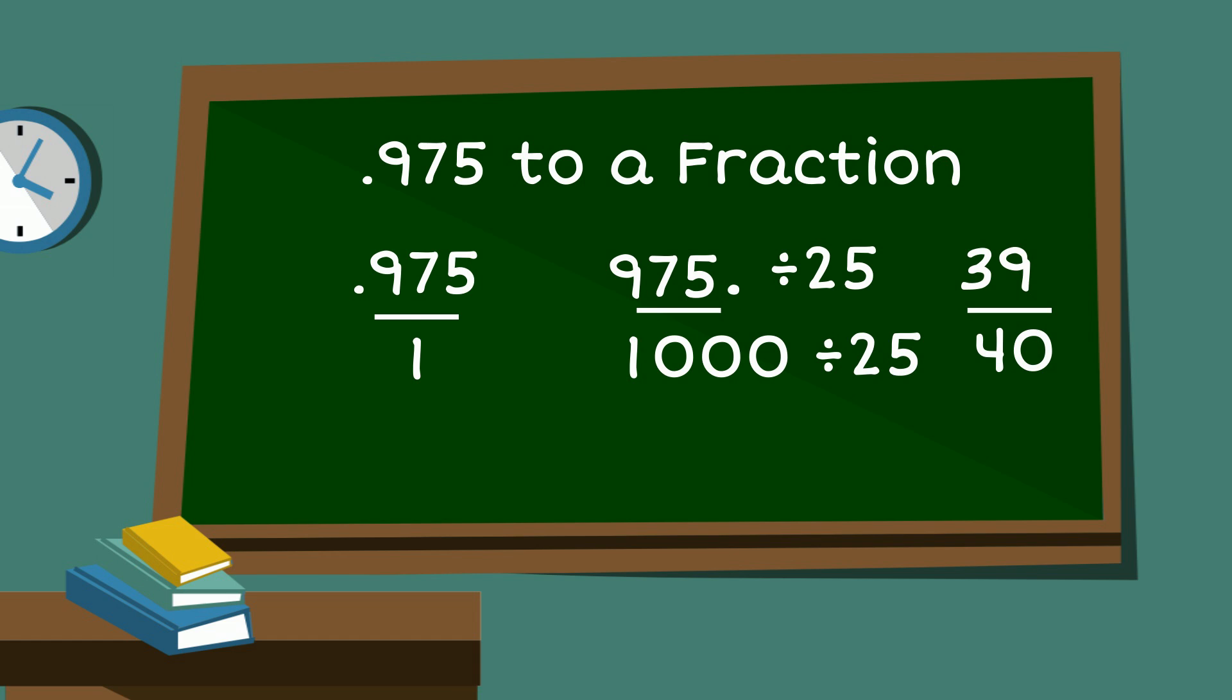And we can't reduce this fraction anymore. So there we go. So .975 (975 thousandths) as a fraction is 39 over 40. Thanks for watching.